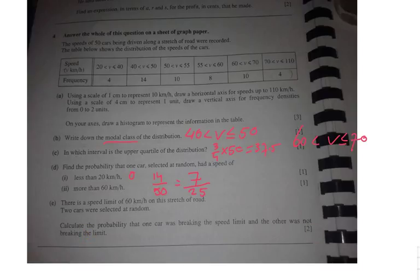But now the last question for two points. There's a speed limit of 60 kilometers per hour on this stretch of road. So basically you could say these cars drive too fast. Two cars were selected at random. Calculate the probability that one car was breaking the speed limit, so going faster, and that the other one was not breaking the speed limit. Now important about this question is that they do not say that the order is important. They don't say the first one has to be breaking the speed limit and the second one cannot.